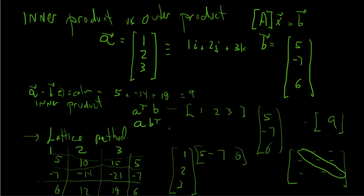If you notice, the diagonal entries add up to the inner product — that's 9. And the rest of these have a little more import than just adding them. That's i, that's j, that's k, i, j, k. You get into the knowledge of being in a right-hand system: j times i is minus k, k times i is j, i times j is k. And k times j is minus i, i times k is minus j, and j times k is i.